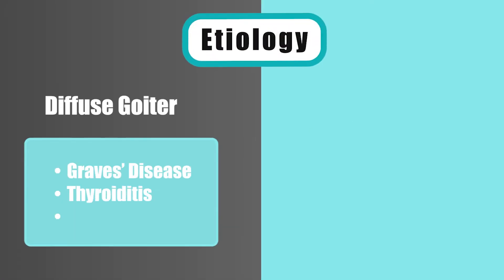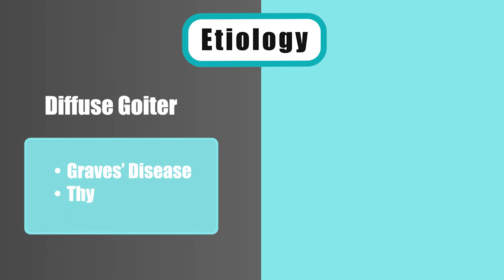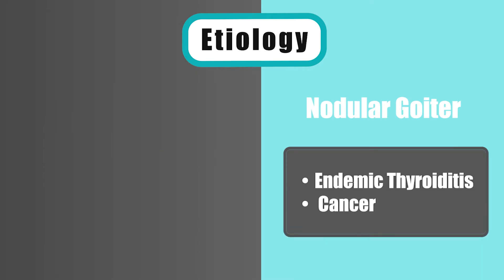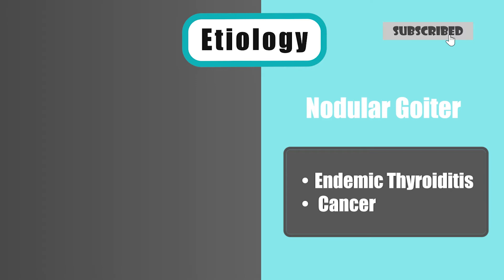Feature number two is etiology. The etiology of diffuse goiter is Graves' disease, thyroiditis, or puberty. On the other hand, the etiology of nodular goiter is endemic thyroiditis or cancer.